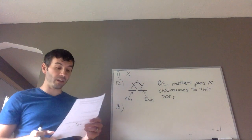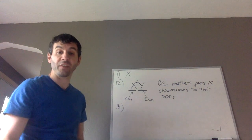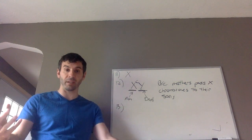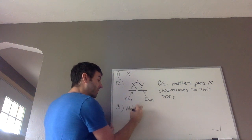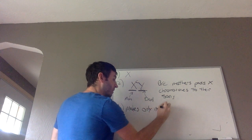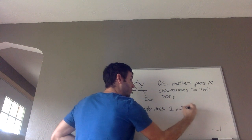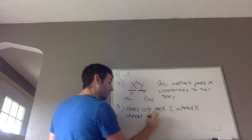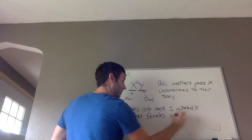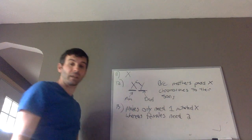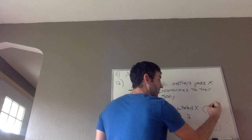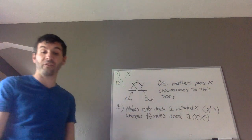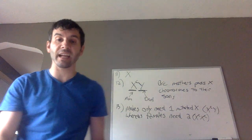Number 13: Why is colorblindness or hemophilia more common in males than in females? Males only have one X chromosome; females have two, so females have a backup copy. Males only need one messed up copy — males only need one mutated X, whereas females need two mutated X's. So females are rarely colorblind or rarely have hemophilia — it's possible, but very rare.